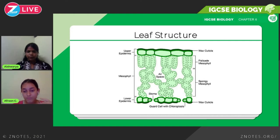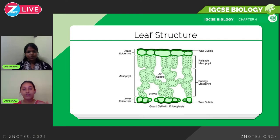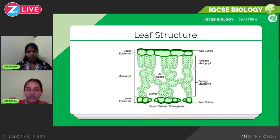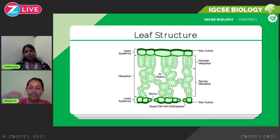Here is the leaf structure. There is the upper epidermis, which has a waxy cuticle that reduces water loss. The mesophyll is the main part of the leaf, split into two layers: the palisade mesophyll and the spongy mesophyll. The palisade mesophyll cells are packed with chloroplasts and have very few air spaces — this is where most photosynthesis occurs. The spongy mesophyll has many air spaces and irregularly arranged cells — this is where gases diffuse in and out of the leaf.